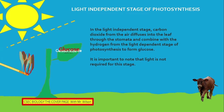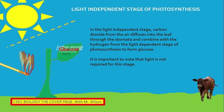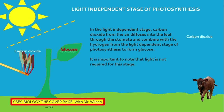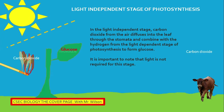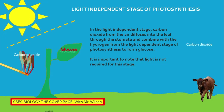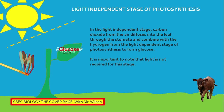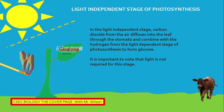In the light-independent stage, carbon dioxide from the air diffuses into the leaf through the stomata and combines with hydrogen from the light-dependent stage of photosynthesis to form glucose. Glucose is the main product formed.